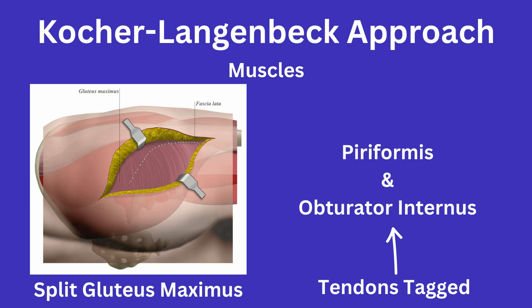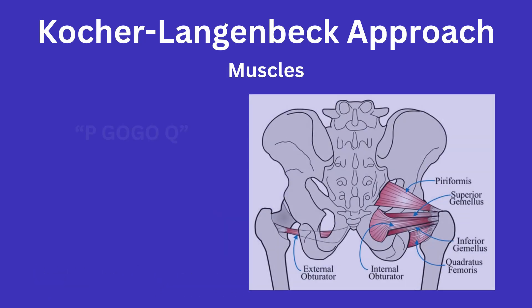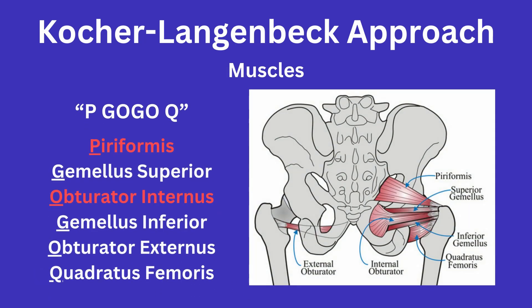Tendons tagged in this procedure are those of the piriformis and obturator internus, which is a common pimping question. You should know the short external rotators of the hip, which can be remembered by P-G-O-Q, standing for the piriformis, gemellus superior, obturator internus, gemellus inferior, obturator externus, and quadratus femoris.